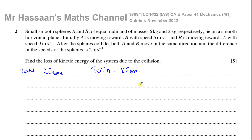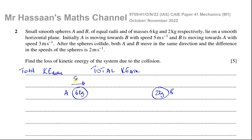To find the total kinetic energy of the two balls before the collision, we consider their masses and velocities. A has a mass of six kilograms and B has a mass of two kilograms. Before the collision, A is moving towards B with a speed of five meters per second and B is moving towards A with a speed of three meters per second.